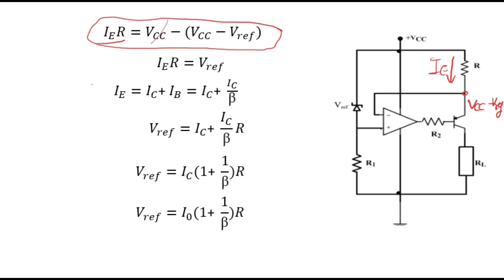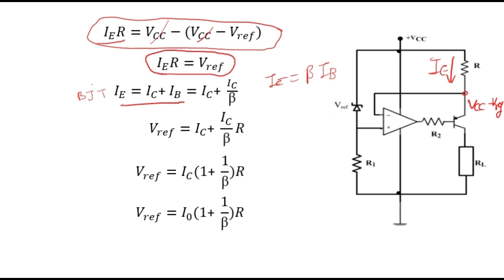When you solve it, VCC and VCC cancel out, and this becomes IE times R equals V-reference. Now for BJT, IE equals IC plus IB. Since beta is already given in the question, we will solve using beta. IC equals beta times IB, so IB equals IC divided by beta. Therefore IE equals IC plus IC divided by beta. When we put this value into the expression, V-reference equals IC plus IC divided by beta, all multiplied by R.